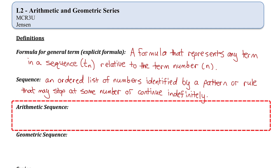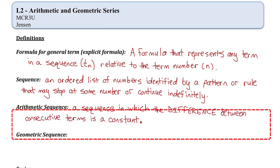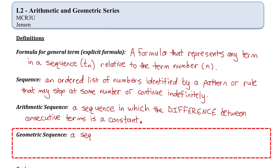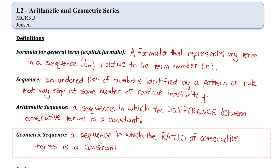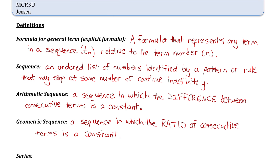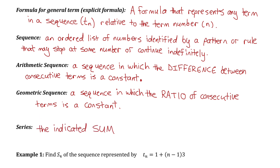An arithmetic sequence is a sequence in which the difference between consecutive terms is a constant. A geometric sequence is a sequence in which the ratio of consecutive terms is a constant. Those definitions are review from lesson 1. What we're going to do differently in this lesson is look at arithmetic and geometric series. A series is when we find the indicated sum of the terms of a sequence.